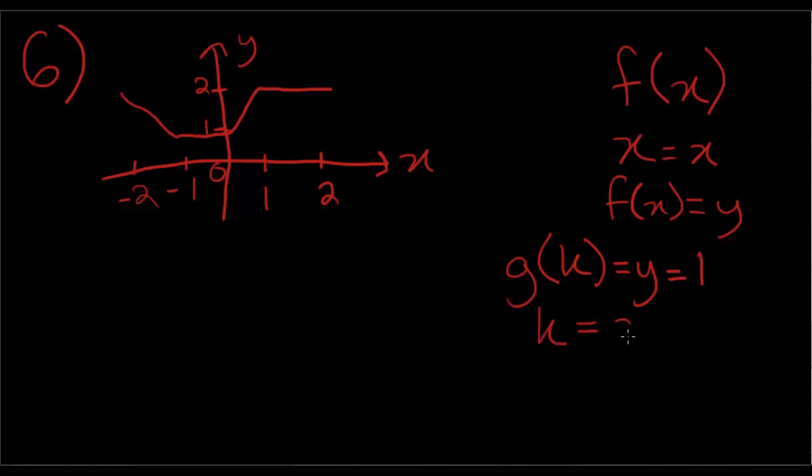k is equal to the x value, which we're not sure of yet. Now we need to find where the graph is equal to 1. It's between the x values of negative 1 and 0. So any value between negative 1 and 0 will work. Looking at the answer choices, the only one that works is negative 0.5, which is choice B.